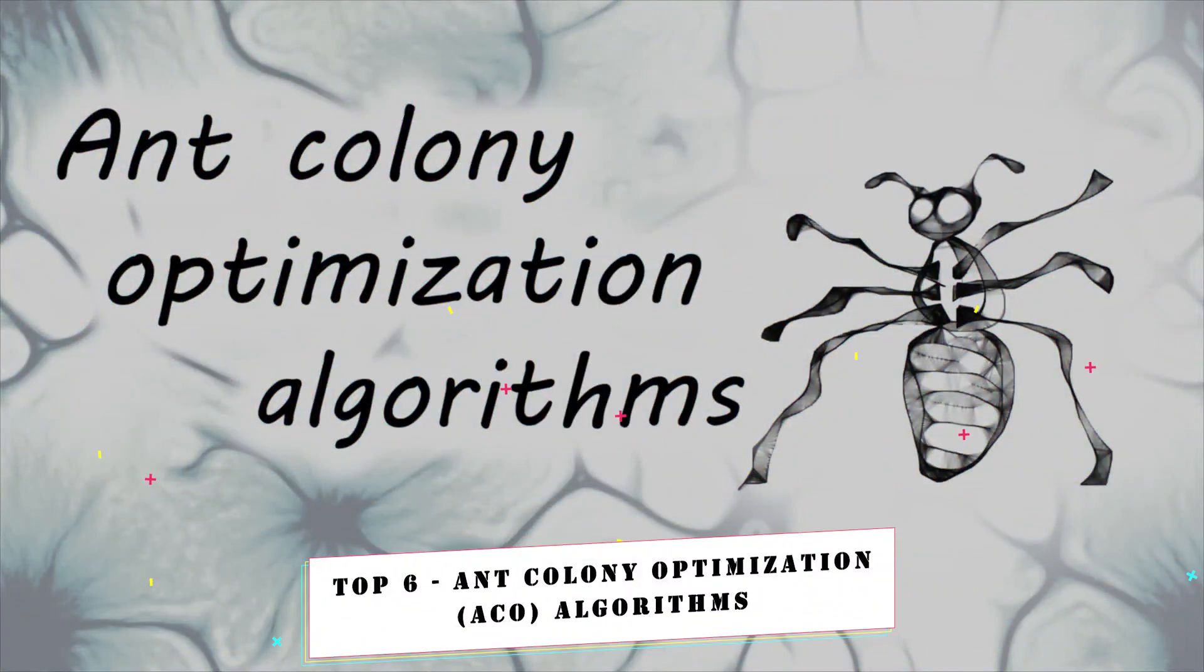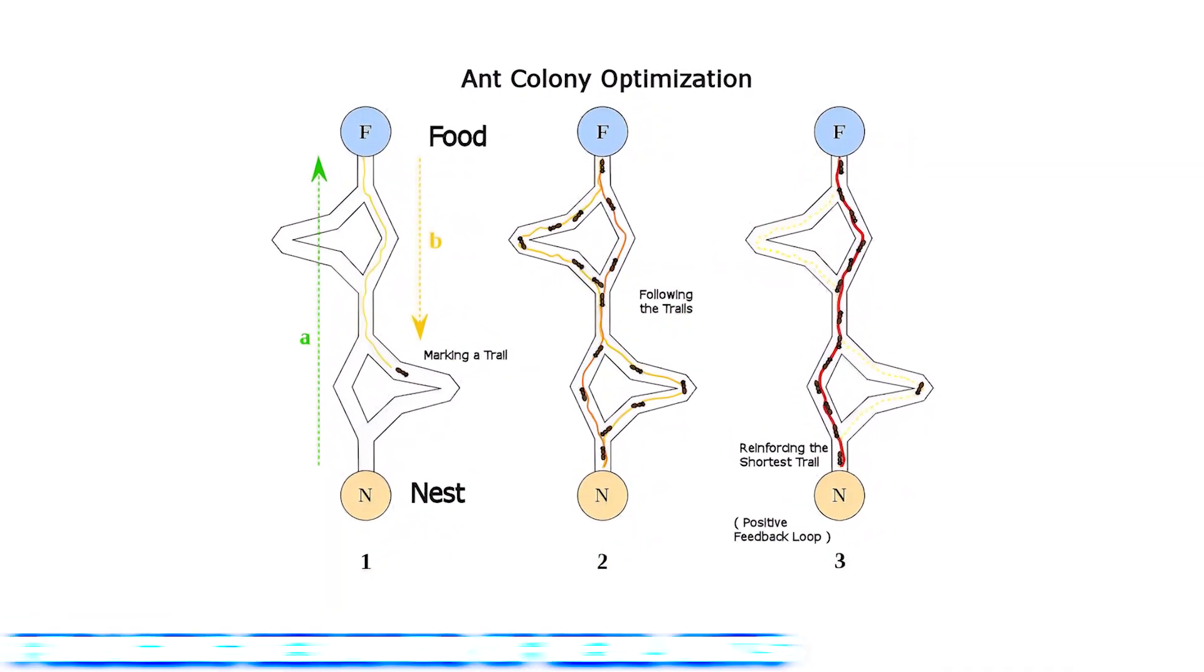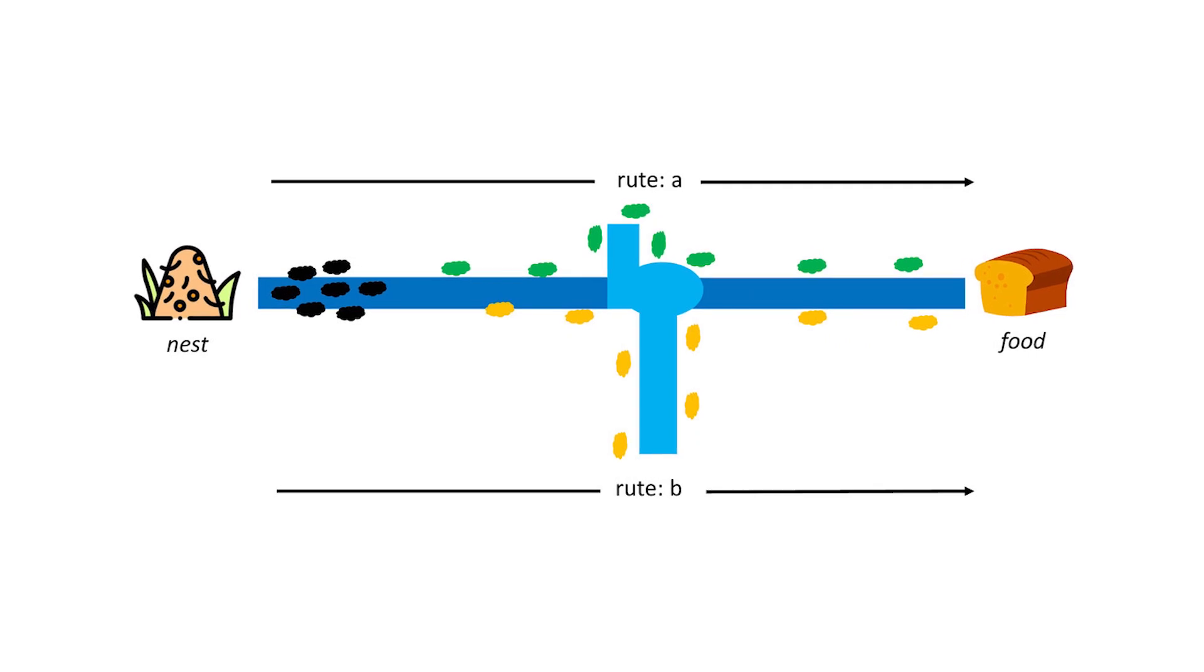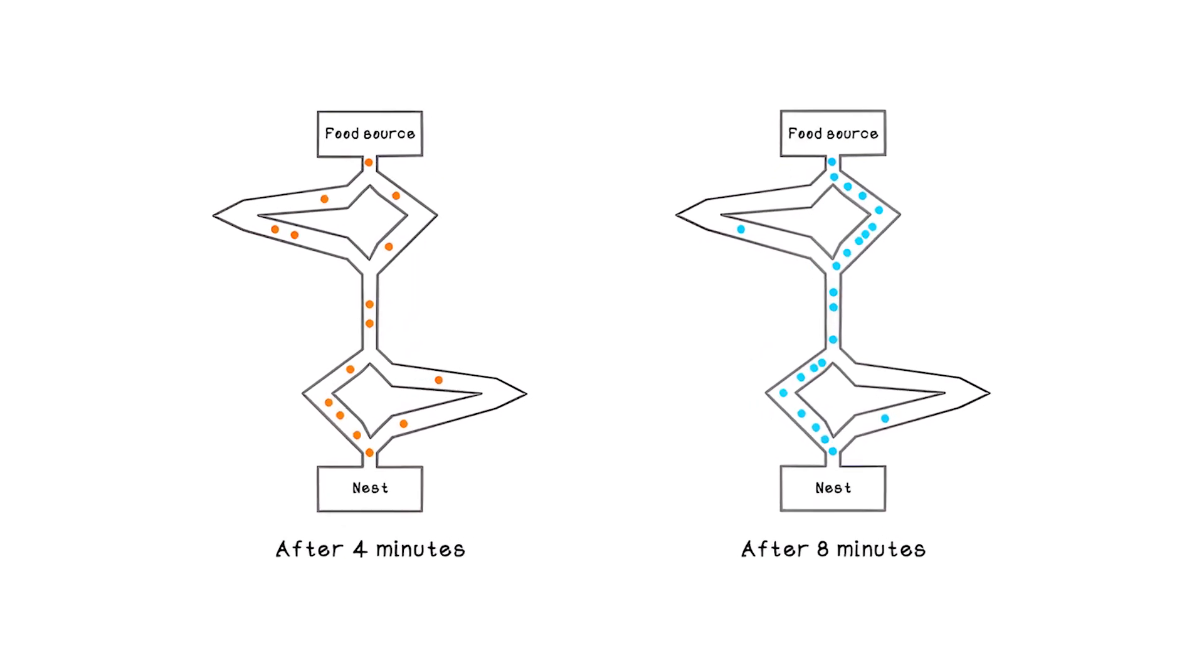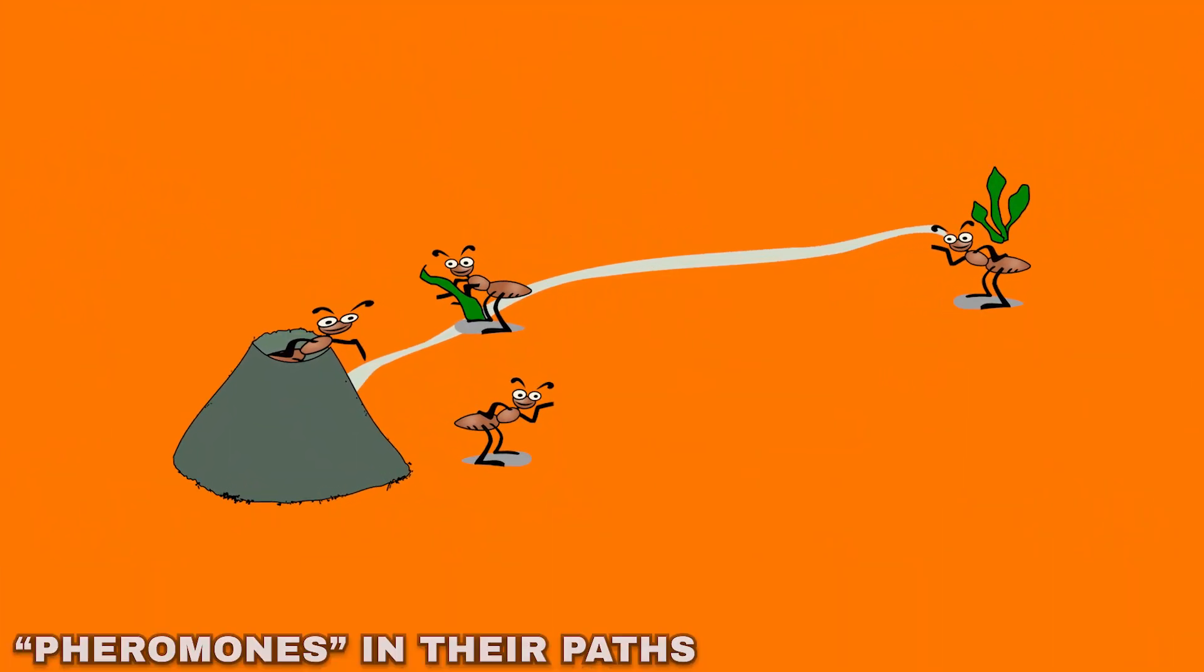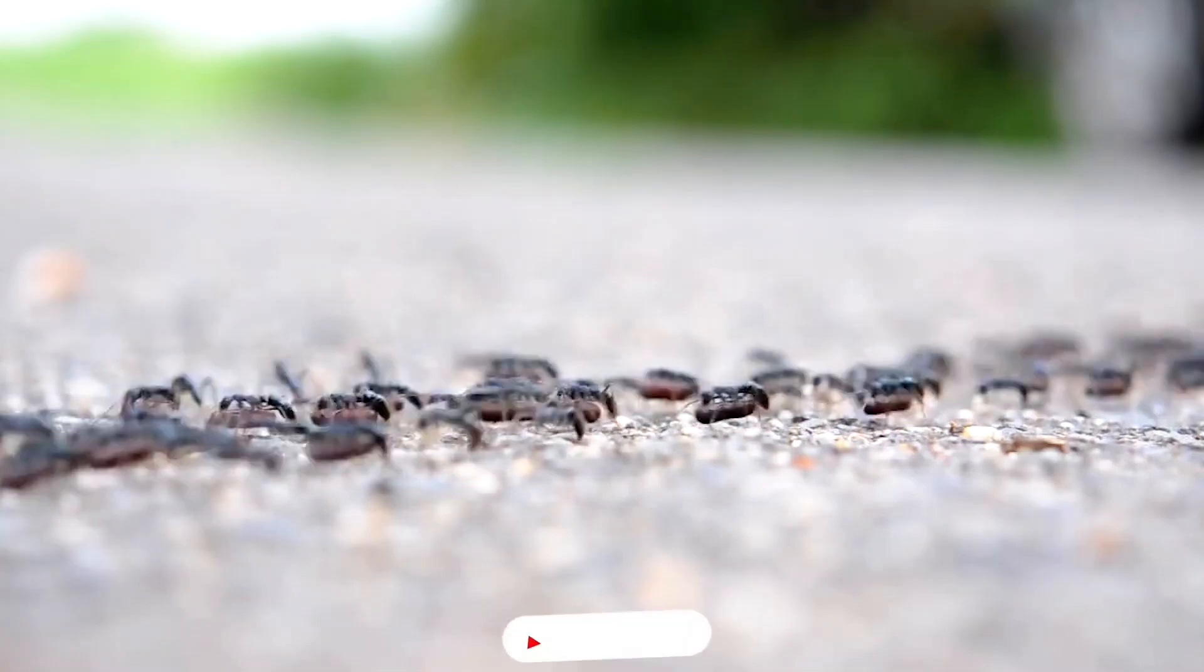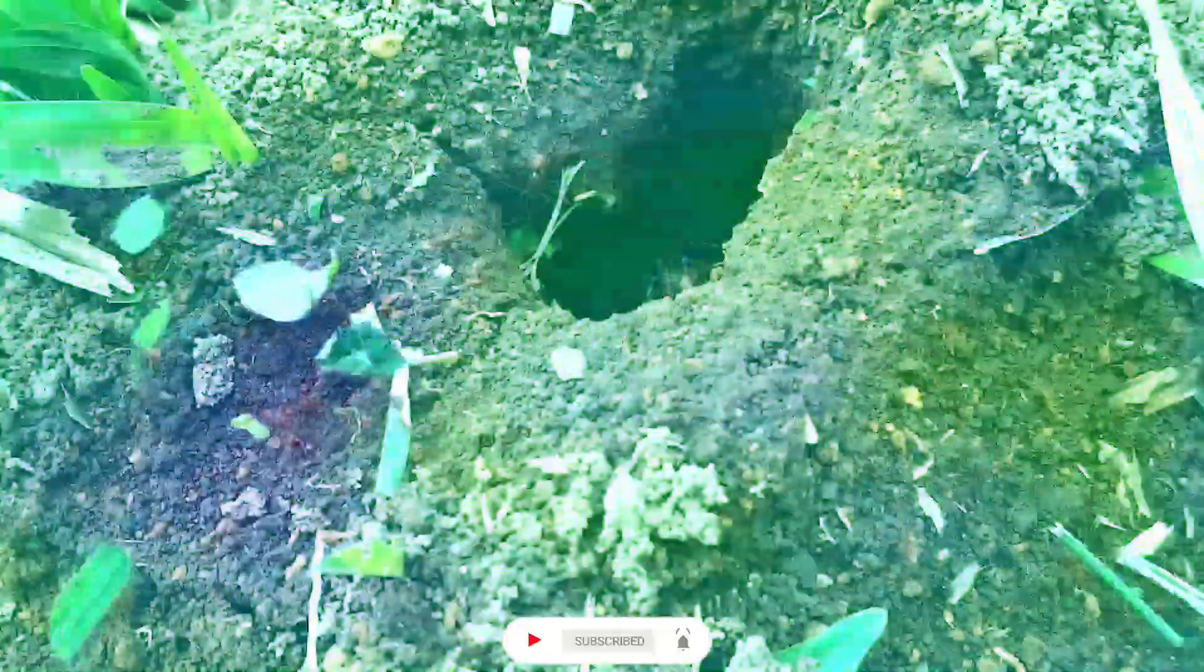Top 6. Ant Colony Optimization. Ant colony optimization algorithms take inspiration from the foraging behavior of real ants to solve optimization problems. Developed based on the observation that ants can find the shortest path between their nest and a food source, ACO applies similar principles to navigate complex solution spaces and identify optimal solutions. The algorithm starts with a population of artificial ants moving through solution space, depositing chemicals called pheromones in their paths. The intensity of the pheromone affects the likelihood that other ants will choose the same path. Over time, shorter and more efficient paths accumulate higher concentrations of pheromone, and ants then direct to these optimal paths.